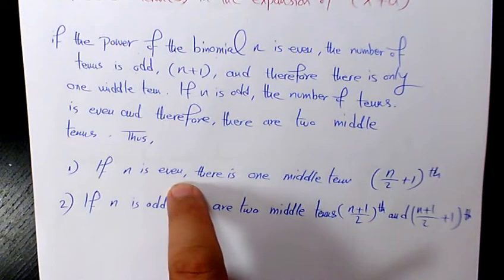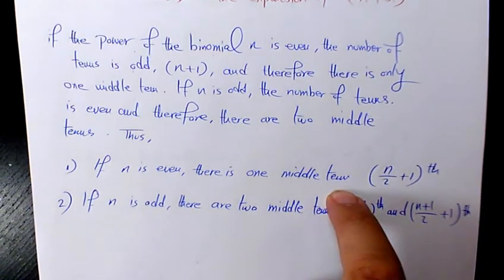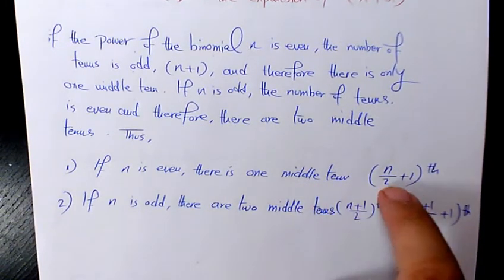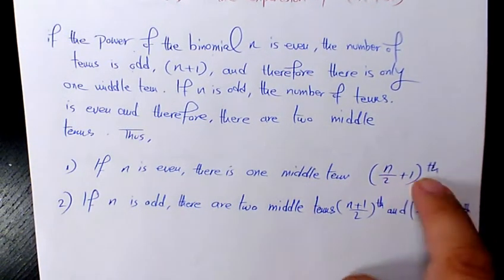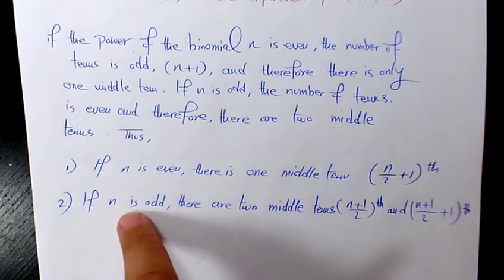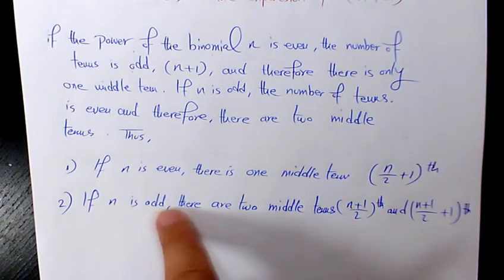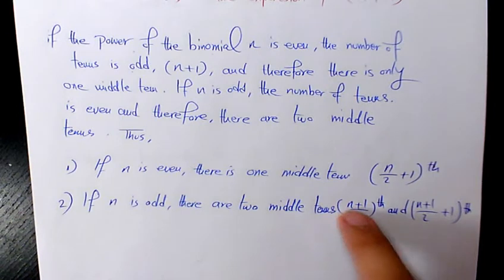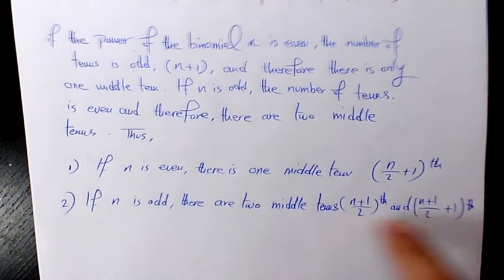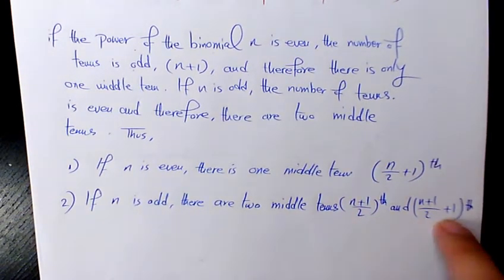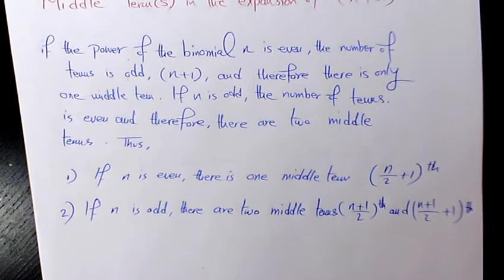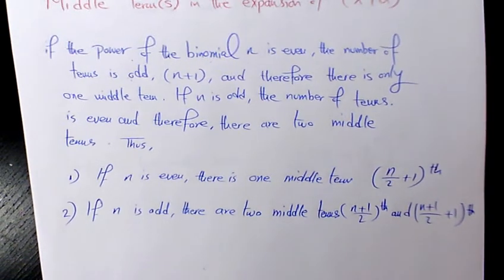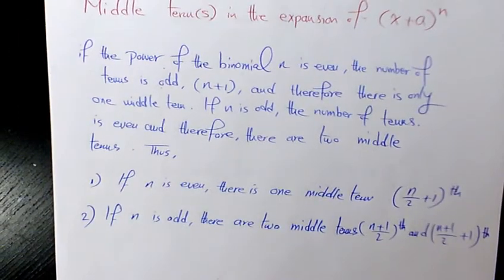So if n is an even number there is only one middle term, which is the (n/2 + 1)th term. But if n is odd, we have an even number of terms and we're going to have the (n+1)/2 term and the (n+1)/2 + 1 term as the two middle terms. That's how we find the middle terms in binomial expansion. Let's see some examples.